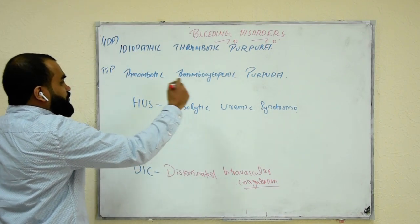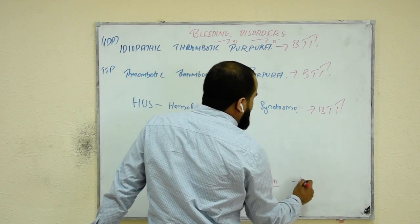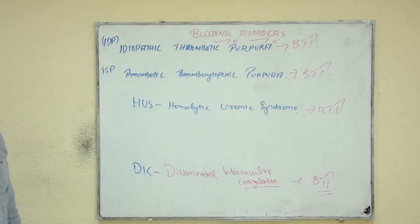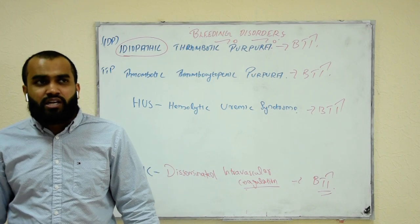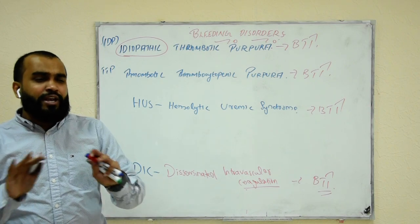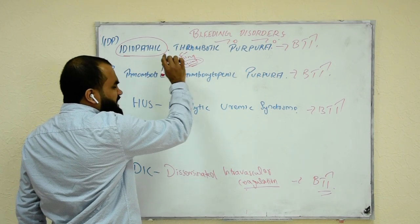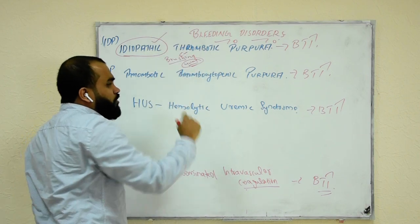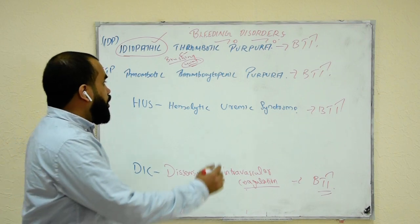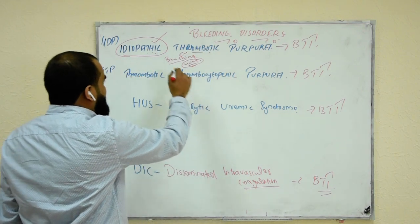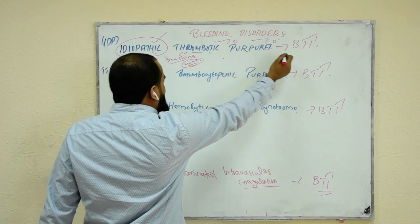The common problem across these conditions is that bleeding time will be more — no clotting is occurring. So how do you differentiate? Idiopathic is very easy. They will give a question: a baby is bleeding, what is the reason? No reason is given — they describe something like gum bleeding with no other reason. Bleeding without any reason — always go for idiopathic thrombocytopenic purpura. Remember, here there is no cells seen, no hemolysis — just bleeding and no one knows the reason.